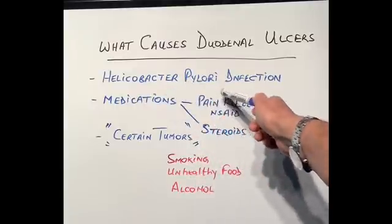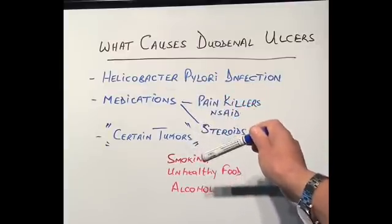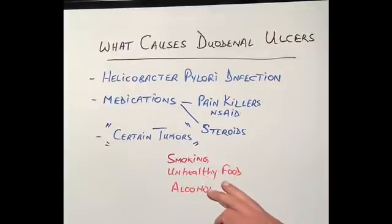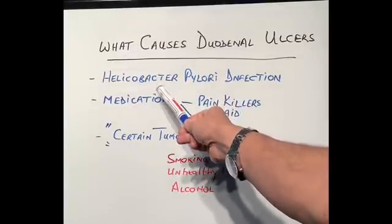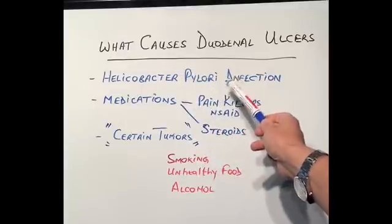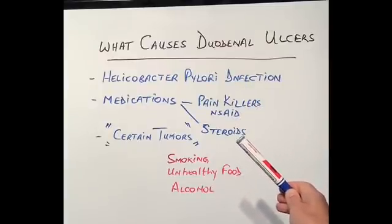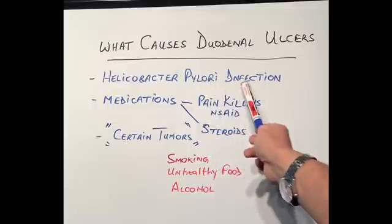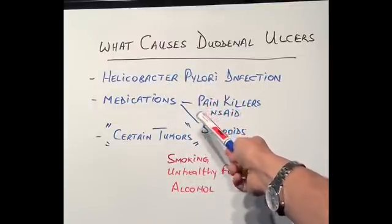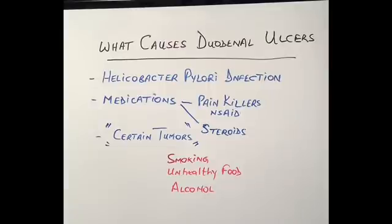Infection with Helicobacter pylori — a little bug that sometimes lives in the stomach — is one cause. In certain parts of the world this bug is very commonly present in the stomach and causes no harm; those people live a normal life with no symptoms. However, patients who have duodenal ulcers have a very high chance of Helicobacter pylori infection, similar to stomach ulcers. It remains unclear why in so many people Helicobacter pylori lives harmlessly in the stomach, whereas in others the same infection can cause severe duodenal and stomach ulcers.